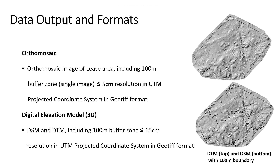The next update is regarding the digital elevation model. The previous SOP only mentioned submitting the digital elevation model, that is the digital surface model and the digital terrain model. In the new updated SOP, it has been made clear that both the digital surface model and the digital terrain model should include the 100m buffer zone. The spatial resolution should be less than or equal to 15cm in UTM projected coordinate system and in GeoTIFF format. Both have a 100m boundary.